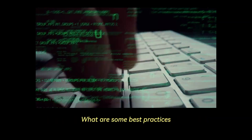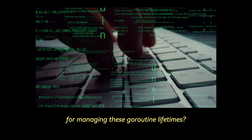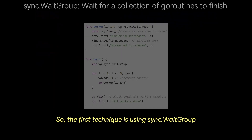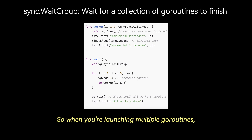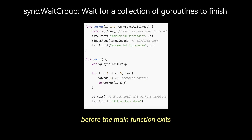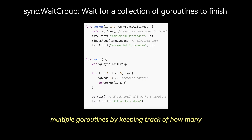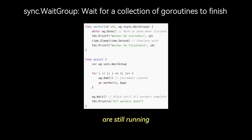What are some best practices for managing goroutine lifetimes? The first technique is using sync.WaitGroup to wait for goroutines to finish. When launching multiple goroutines, you want to ensure they complete before the main function exits. The sync.WaitGroup helps synchronize multiple goroutines by keeping track of how many are still running.